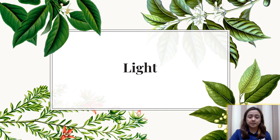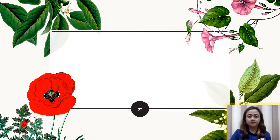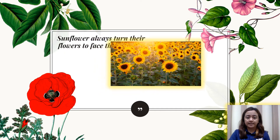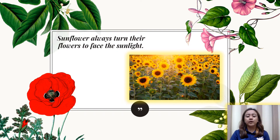Plants respond to light, and it affects the growth and development of the plant. One example of a plant that responds to light is the sunflower. Sunflowers always turn their flowers to face the sunlight.